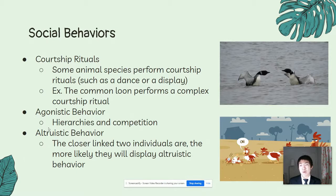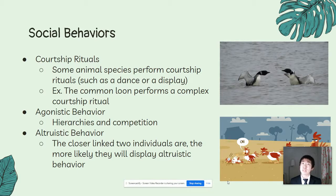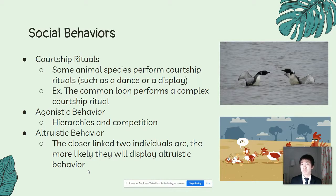Agonistic behavior is what it sounds like. Agonistic behaviors enable animals to compete and to establish hierarchies. In this picture on the right, you see the chicken pecking order. When putting a bunch of hens together, you will find that they immediately start pecking each other to establish the pecking order — a dominance hierarchy among the flock. And of course, competition may take the form of guarding territory or competing for females or even males.